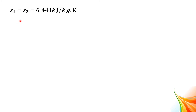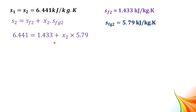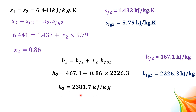We know S2 equals S1 equal to 6.441 kJ/kg·K. Substituting into S2 equals Sf2 plus X2 times Sfg2 with the steam table values, we get X2 equal to 0.86. Now substituting X2, Hf2, and Hfg2 into H2 equals Hf2 plus X2 times Hfg2, we get H2 equal to 2381.7 kJ/kg.